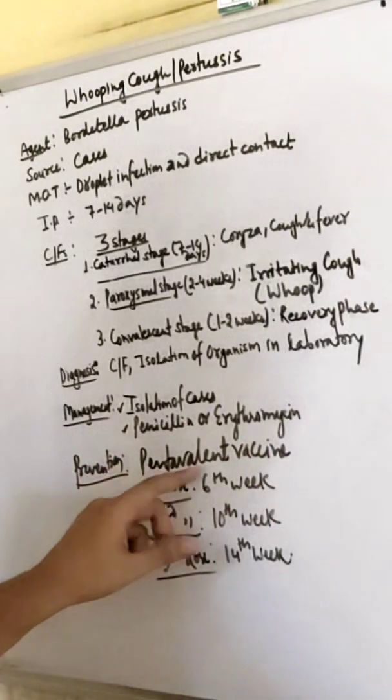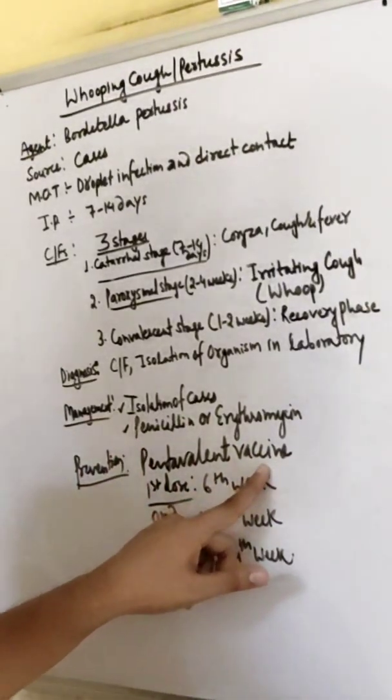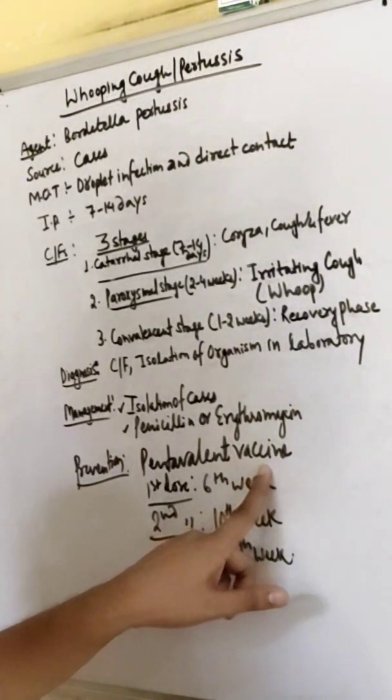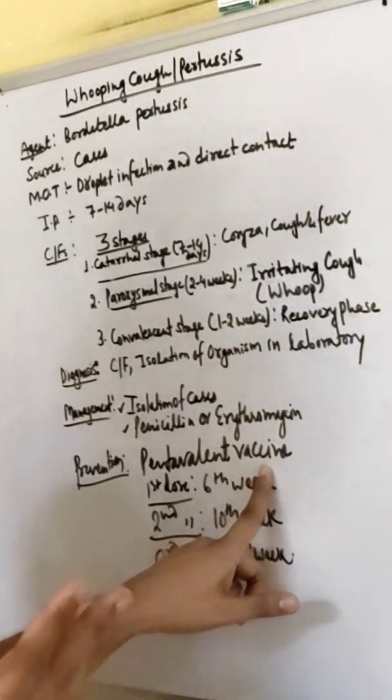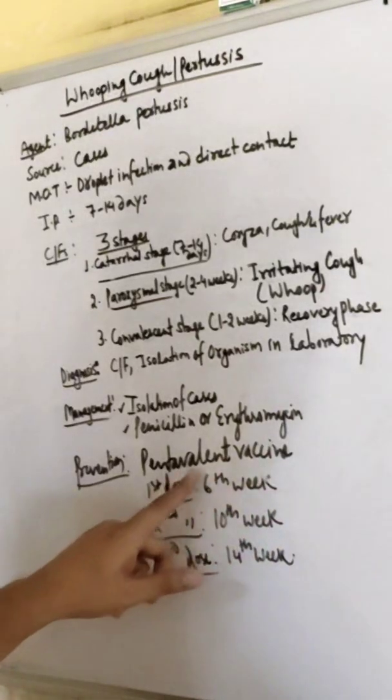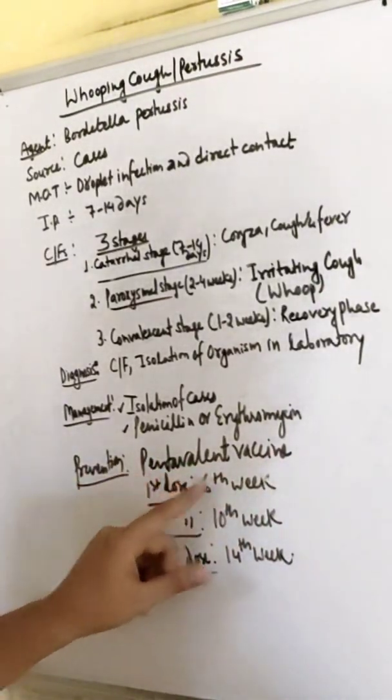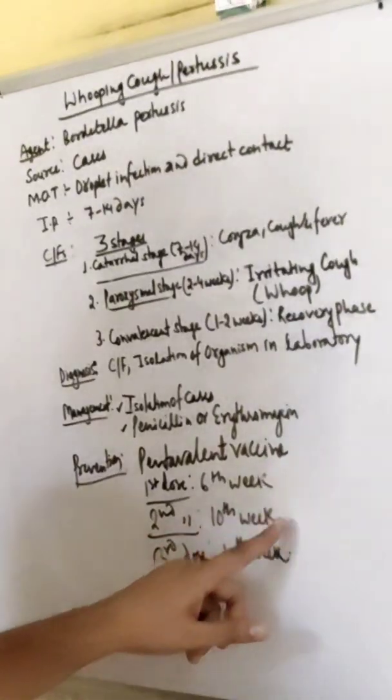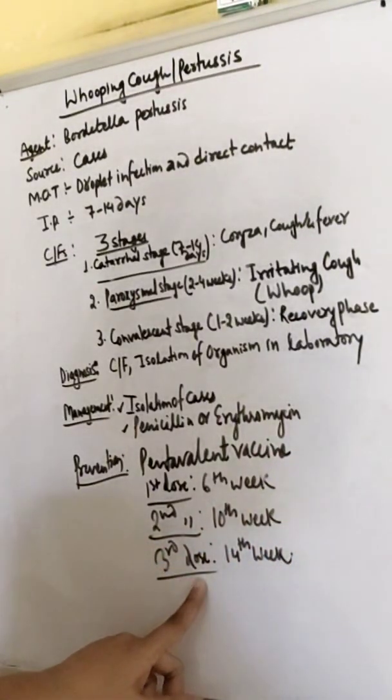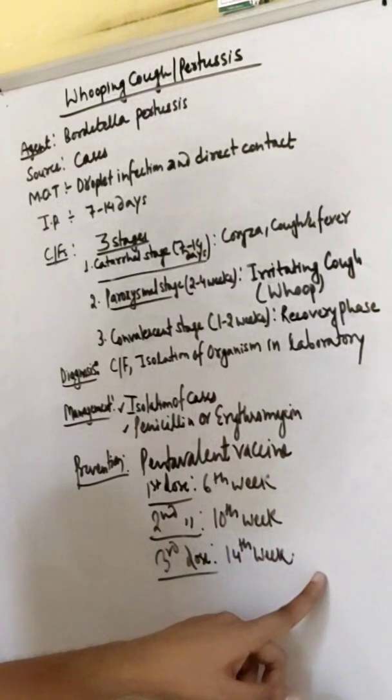What is the preventive measure? Pentavalent vaccine which is given in routine immunization for children. In Nepal, Pentavalent vaccine is given. First dose is 6th week, second dose is 10th week, and third dose is 14th week.